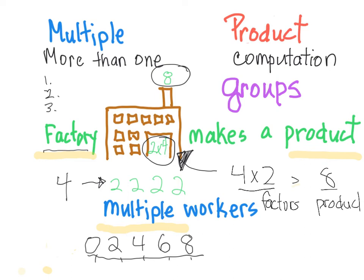Now in computation to find a product, you won't usually see that as a number line. But what you may see is an area model. And this area model is showing me four groups of two.